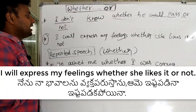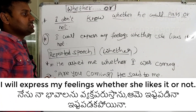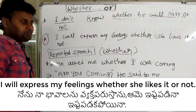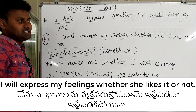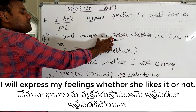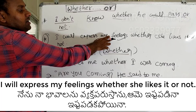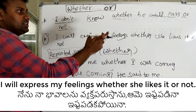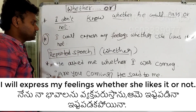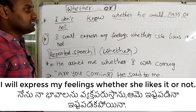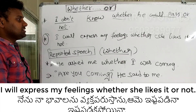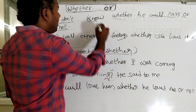Next example: I will express my feelings whether she likes it or not. This shows how we use 'whether' and 'or' together in a sentence.